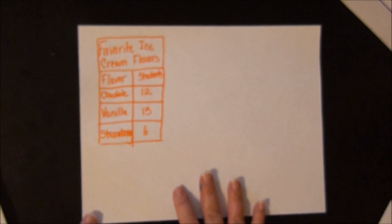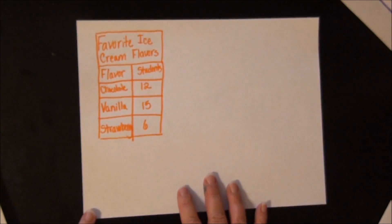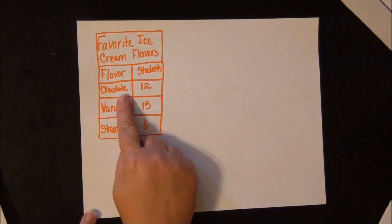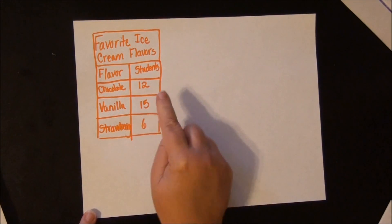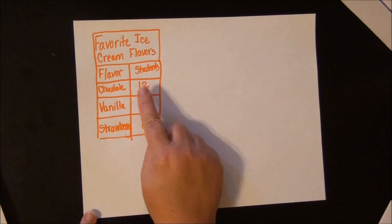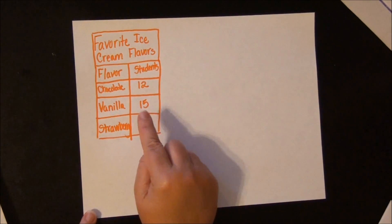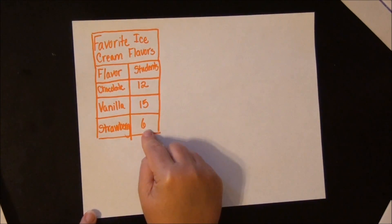We took a survey of a class and asked them if chocolate, vanilla, or strawberry were their favorites. So in this class, 12 students said they liked chocolate, 15 students said they liked vanilla, and 6 students liked strawberry.